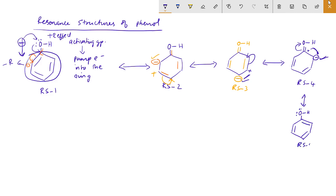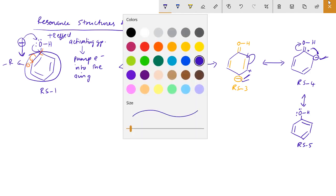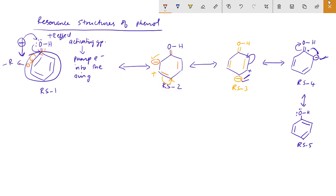This will be resonance structure 5. If we do numbering, we number the carbons 1, 2, 3, 4, 5, and 6. If we do the double bond positions, they are at 2, 4, and 6.